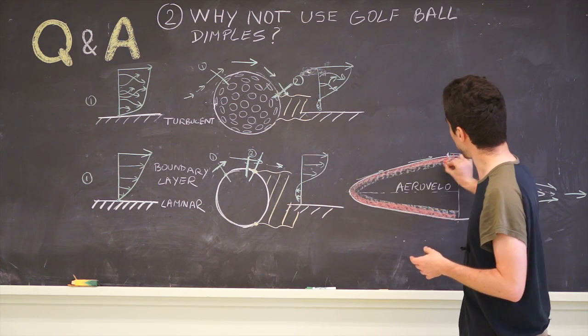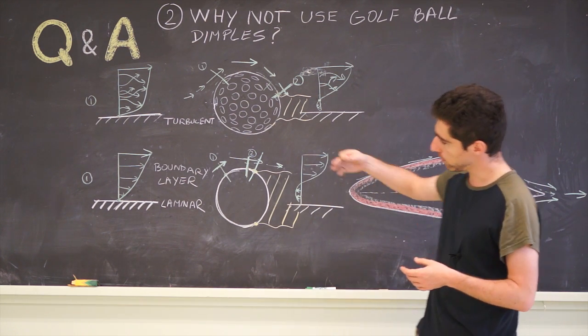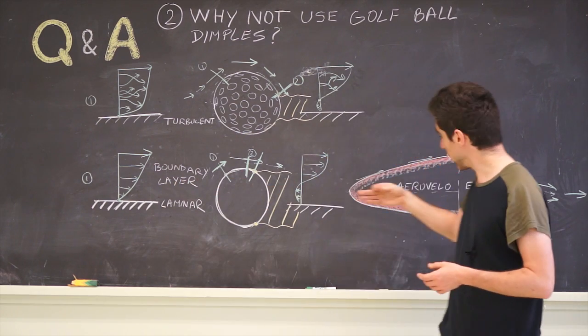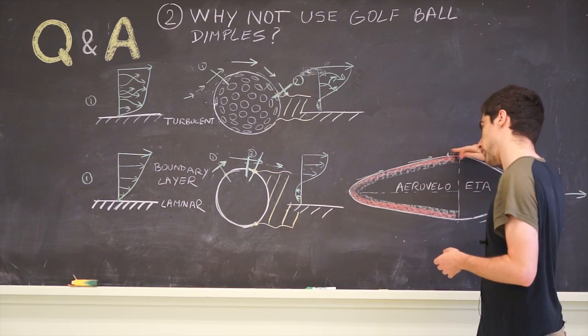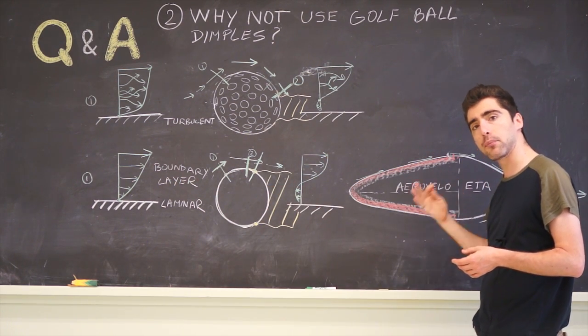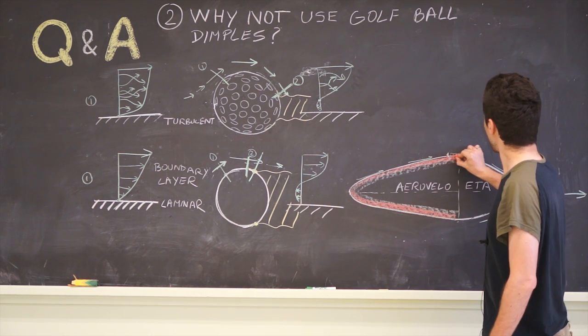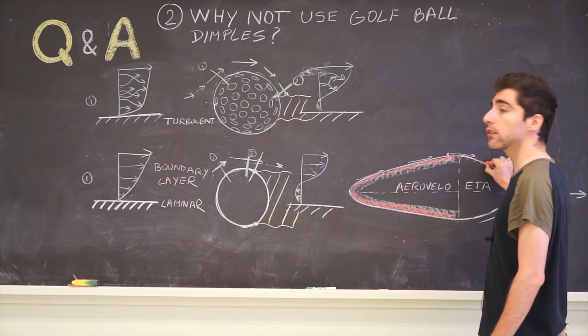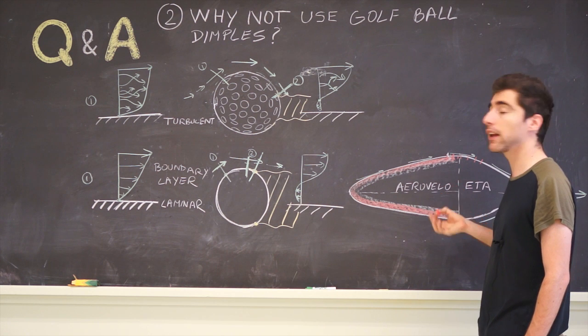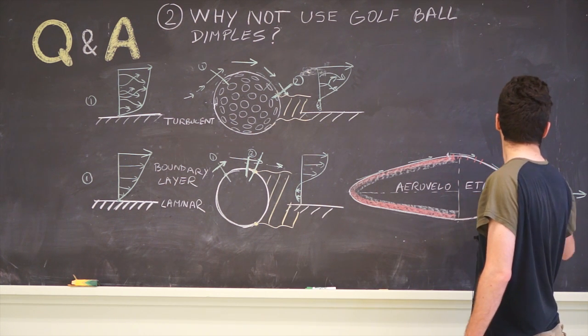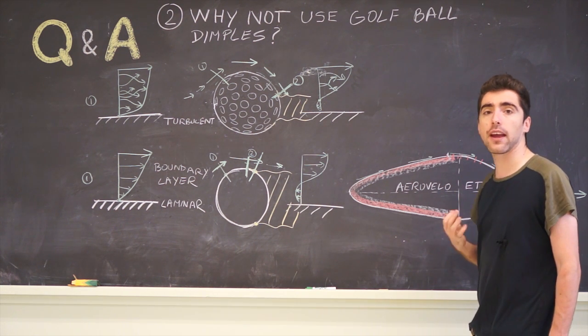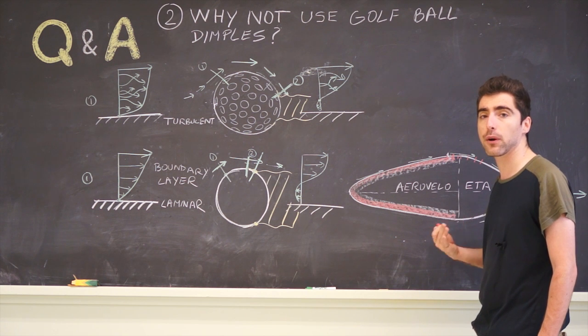So we designed this region to allow the boundary layer to stay laminar for as long as possible by making it very smooth and giving it a proper profile. At some point here, the boundary layer is going to trip and become turbulent anyway, and we are not worried about it creating any sort of separation.